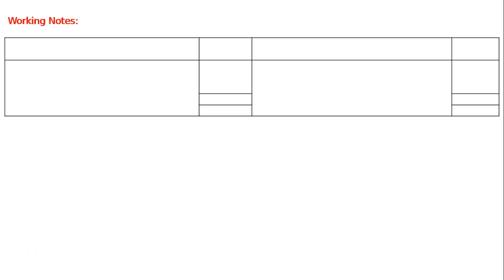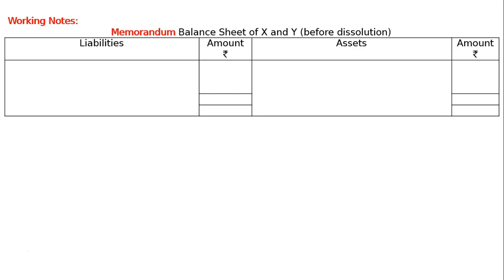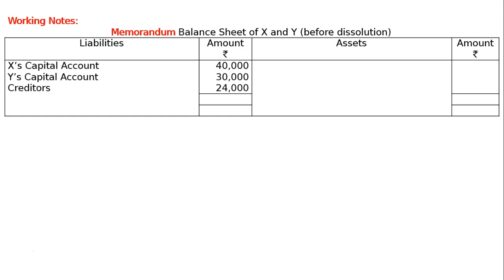Prepare necessary ledger accounts. In the working notes, everything is given except sundry assets. We have to prepare a memorandum balance sheet of X and Y before dissolution to find out the sundry assets. Starting from the liability side: X capital rupees 40,000, Y capital rupees 30,000, creditors rupees 24,000 — total rupees 94,000. Taking it to the asset side, we find the sundry assets as the balancing figure, rupees 94,000.